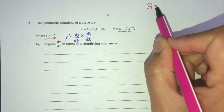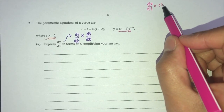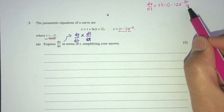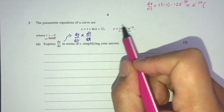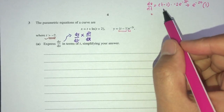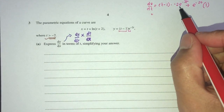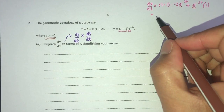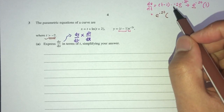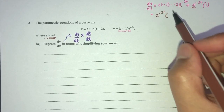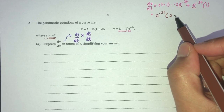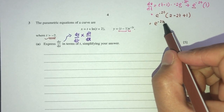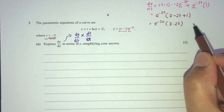Applying the product rule for dy/dt: the first part differentiates to 1 (times the exponential), and the second part keeps the exponential multiplied by −2. Factorising, we get e^(−2t) times (−2(2−2t) + 1), which simplifies to e^(−2t)(3 − 2t) for dy/dt.